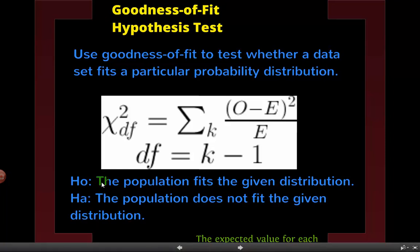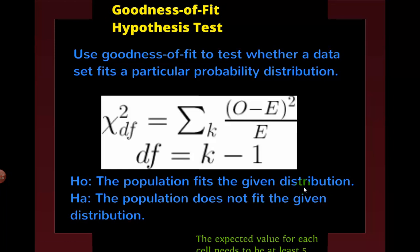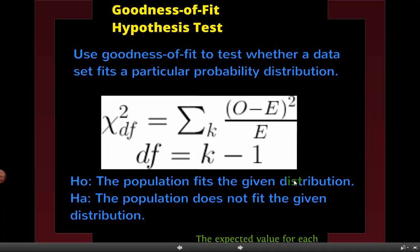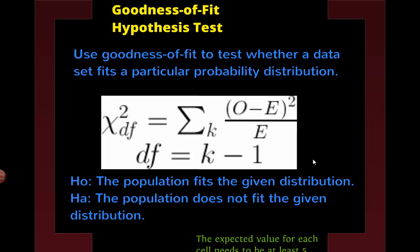The null hypothesis is that the population fits the given distribution — so we're no longer just writing a number. We're not saying those things because we don't have a number to fit; we have a distribution, so it either fits the distribution or it doesn't. The expected value for every part of the table has to be greater than 5, and for every cell it has to exceed 5.